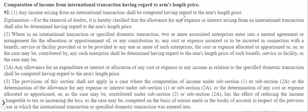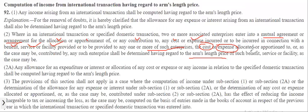In summary, when two or more associated enterprises enter into a mutual agreement or arrangement for allocation, apportionment, or contribution of any cost or expense for any benefit, service, or facility provided or to be provided to any one or more of such enterprises, the cost or expense allocated, apportioned, or contributed by such enterprise shall be determined having regard to the arm's length price of such benefit, service, or facility, as the case may be.